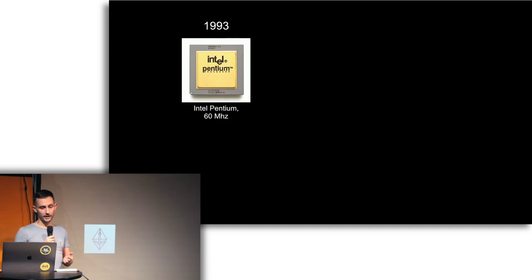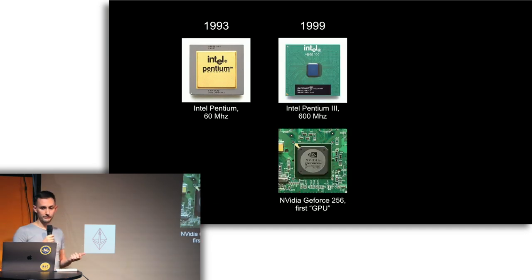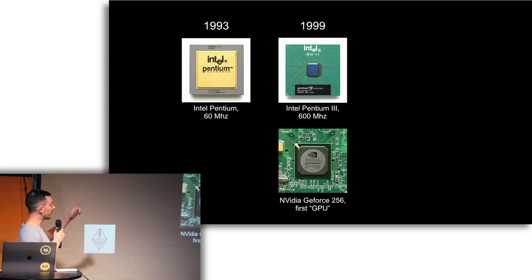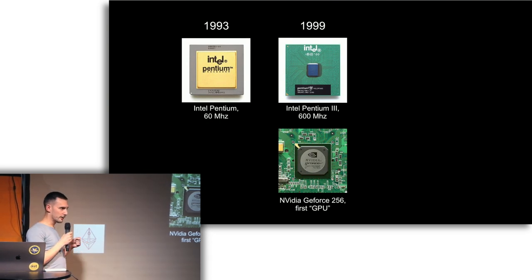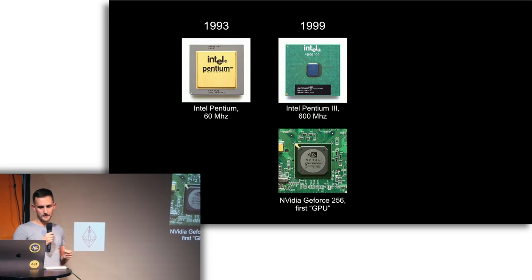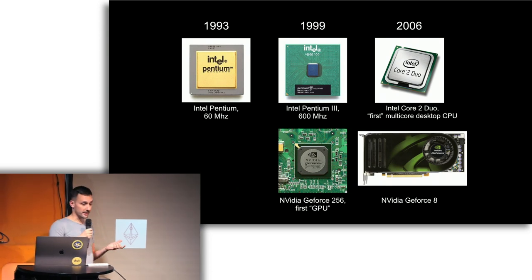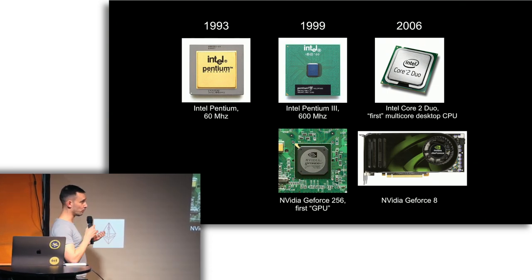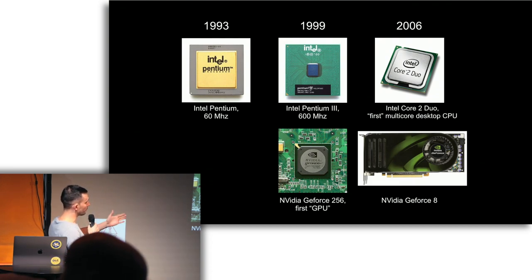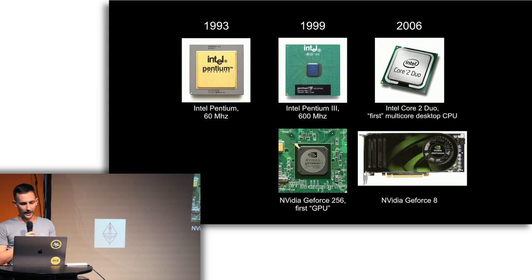Whereas if you think about the 1990s, we had an Intel Pentium processor and it ran at 60 megahertz. Then six years later we had 10x and we had a Pentium 3 which ran at 600 megahertz. But 1999 — I bring this up because it's also the introduction of the first GPU. The GPU was a card that you plugged into your existing computer to make it do more computations. It took another seven years before the first desktop dual-core processor came around. By 2006 NVIDIA was at its GeForce 8 series.